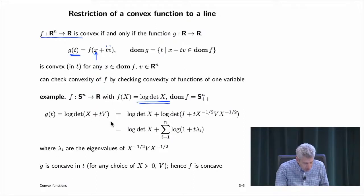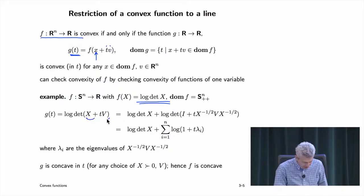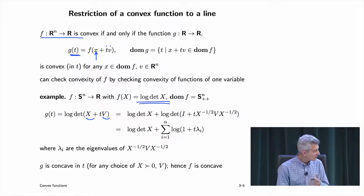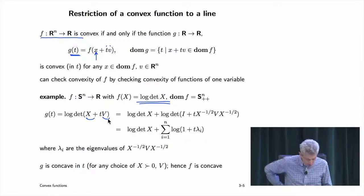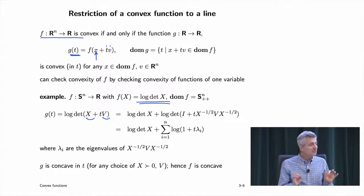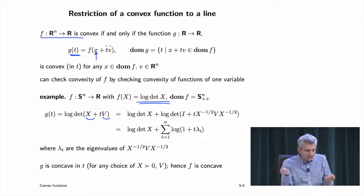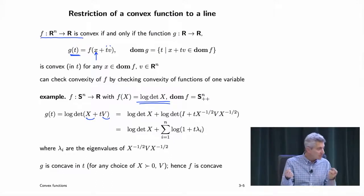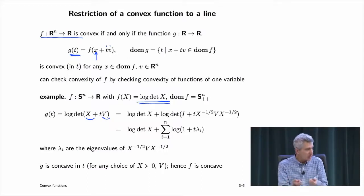We can assume without loss of generality that x is positive definite, since the line has to intersect the positive definite cone. v is merely symmetric. So x + tv is a line of matrices — a line of potential covariance matrices parameterized by t. For some interval of t, x + tv is positive definite, though if t gets large enough the matrix may cease to be positive definite.